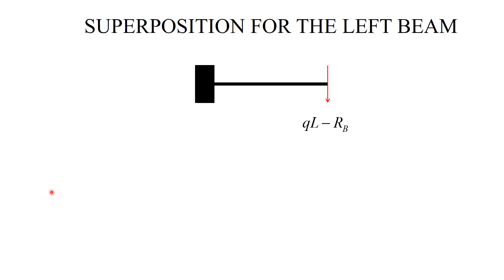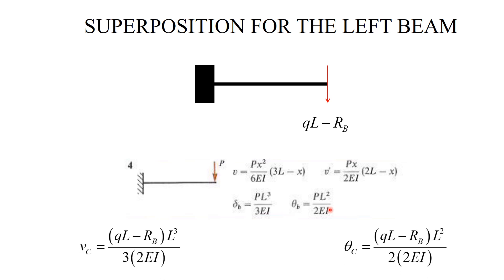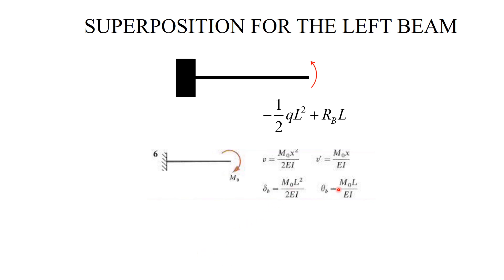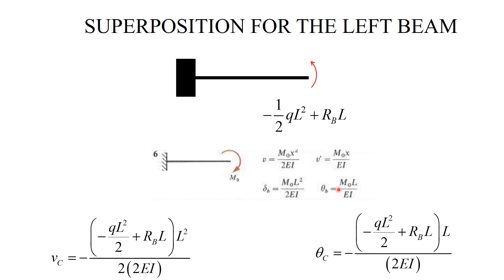Now I consider the second load, the point force at the tip. The table is here. That's the deflection and slope I am interested in. The force is QL minus R_B and the stiffness is 2EI. The final load is the couple. Again, here is the table, the deflection, the slope. I use minus sign because my couple is counterclockwise and the tabulated couple is clockwise.